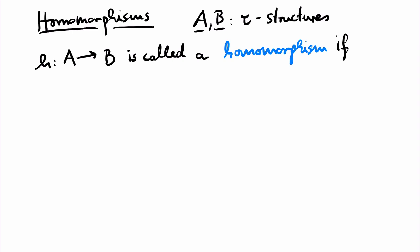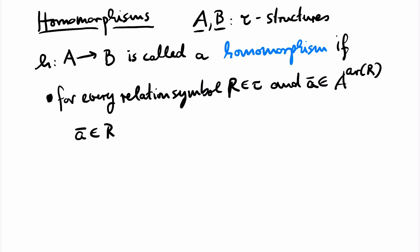Formally, a function H from A to B is a homomorphism if for every relation symbol R in the signature and every tuple in the relation for R in A, the tuple obtained by applying H component-wise is in the relation for R in B.